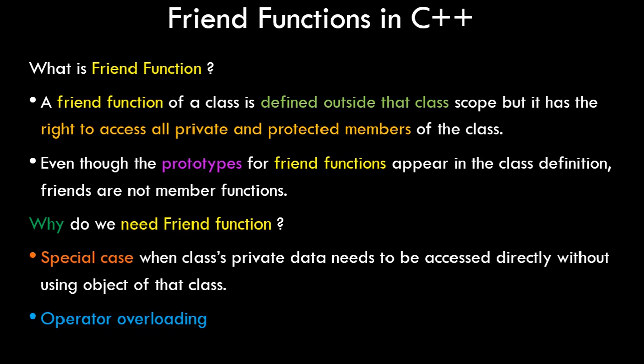That second point will be clear when we go ahead and type in the program. The last point is why do we need friend functions. As mentioned, there might be a special case when a class's private data needs to be accessed directly without using an object of that class. We also need friend functions to perform operator overloading — just as we overload functions, there is a concept of operator overloading which can be done via friend functions.